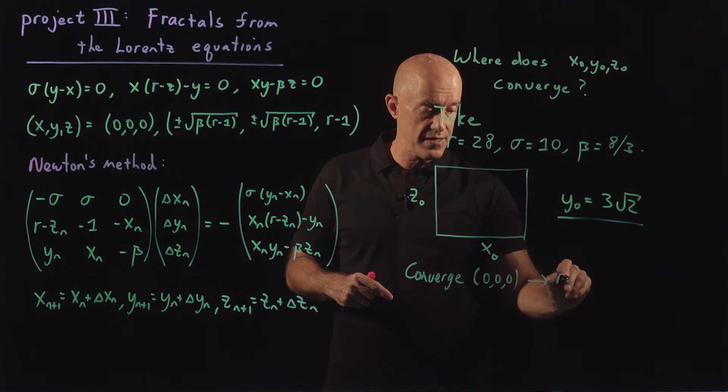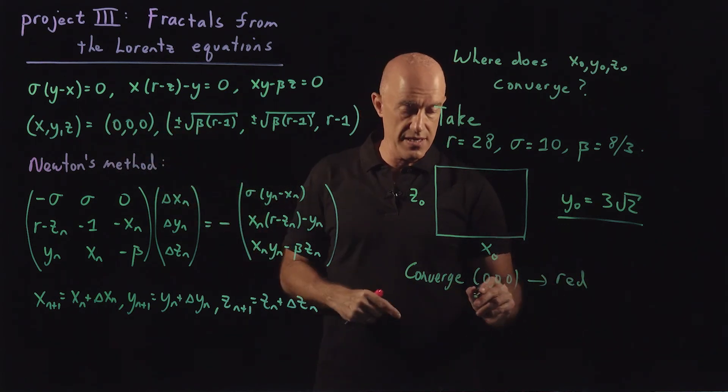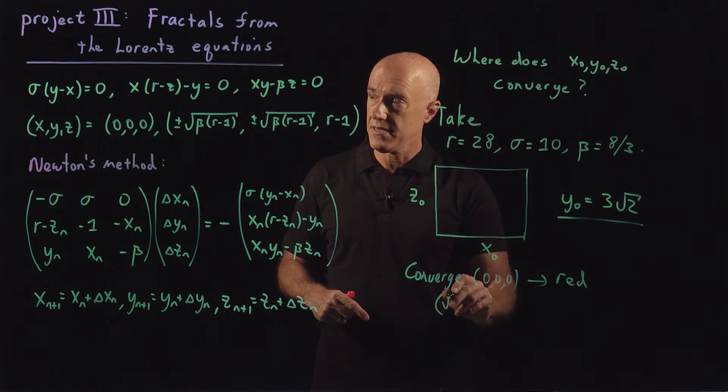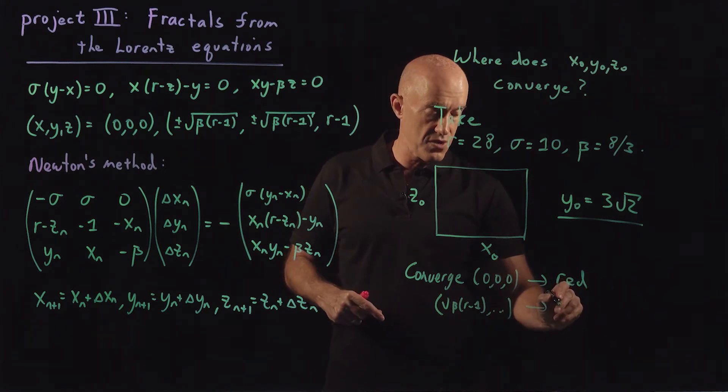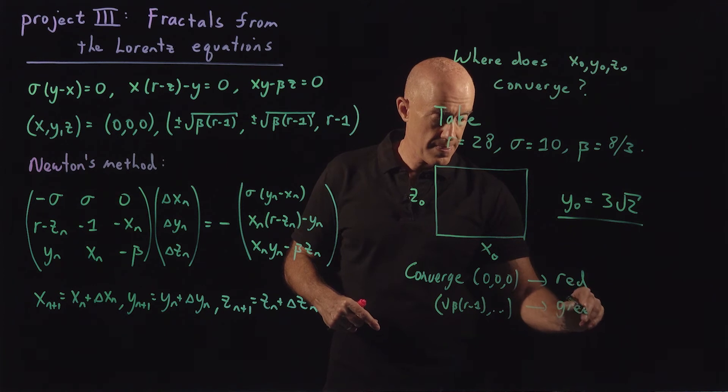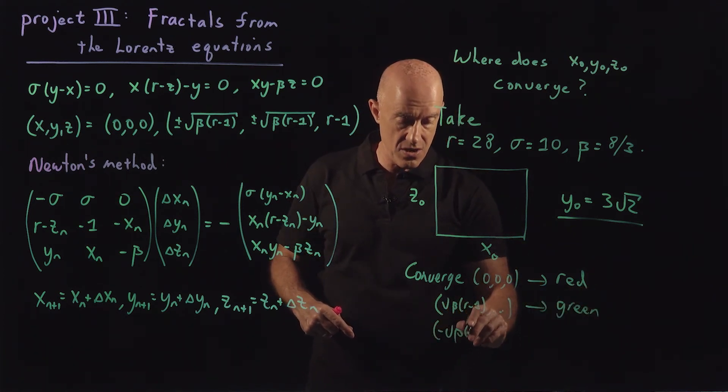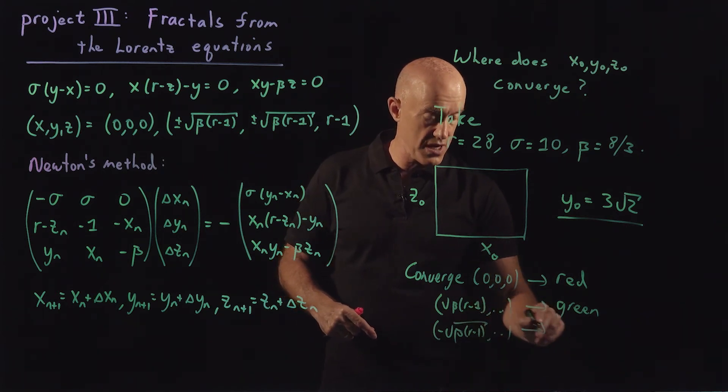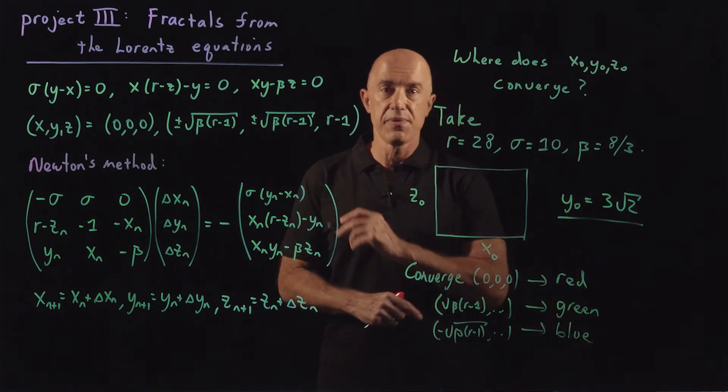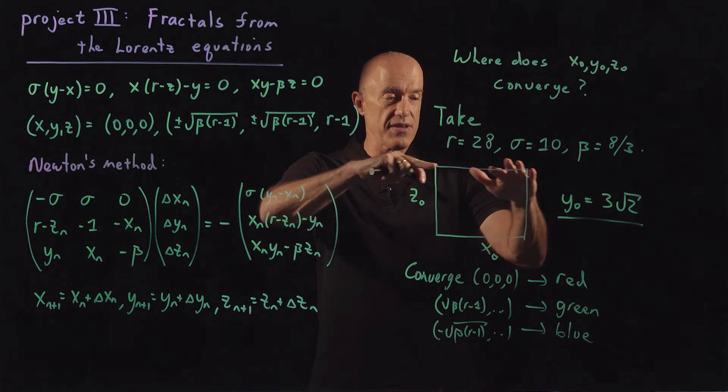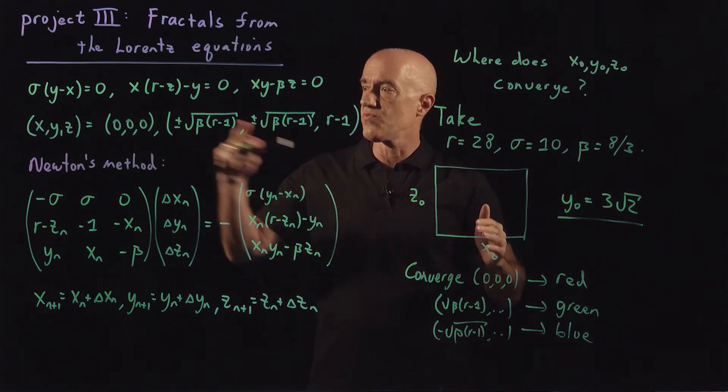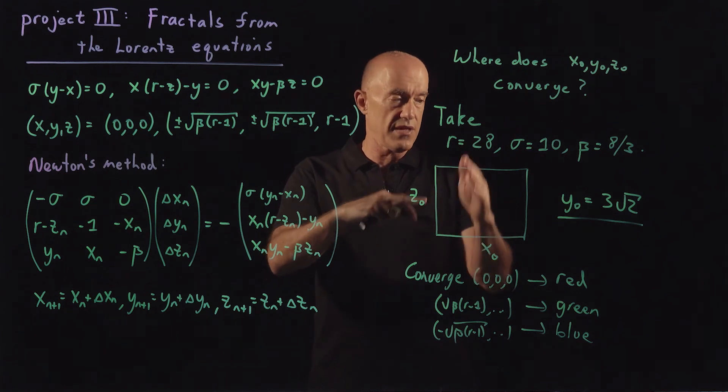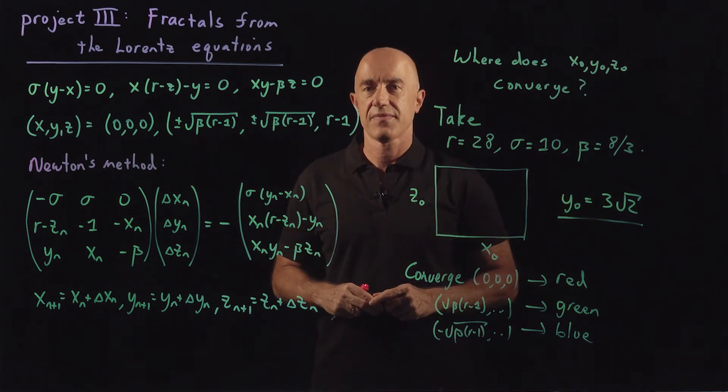Then say you would color red. If you converge to the second root, which would be plus beta, beta, r minus 1, et cetera, then you would color green. And if you converge to minus square root of beta, r minus 1, et cetera, then you would color blue. RGB scheme, color scheme, right? So you would have your grid points then would get colored red, green, or blue, depending on which route you converge to. Choosing x naught, z naught on the grid with y naught fixed. That's your project.